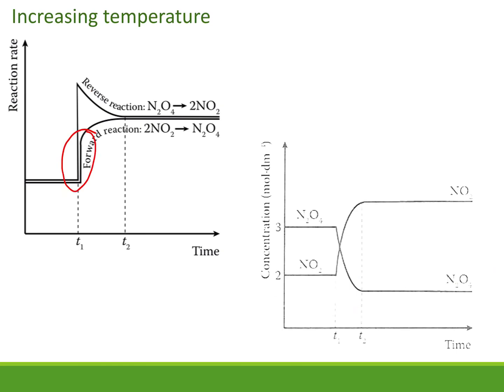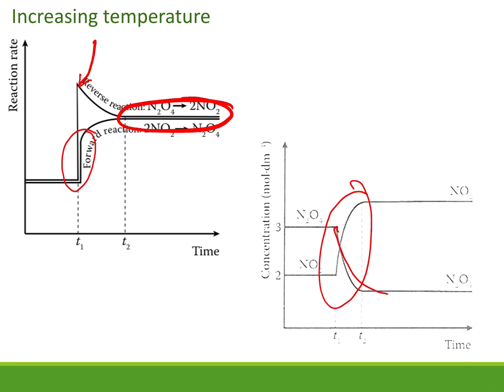Now for a temperature change: when temperature is increased, both reaction rates increase and the reverse reaction is favored. On the concentration graph, both concentrations change — the product gets smaller and the reactants get bigger — meaning we end up with more reactants and less product.